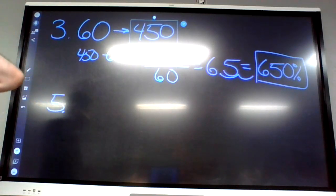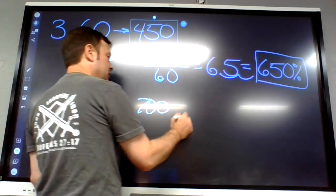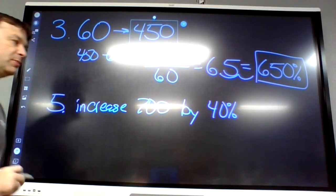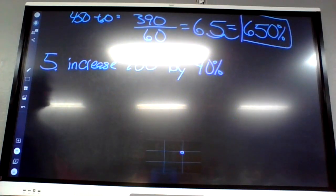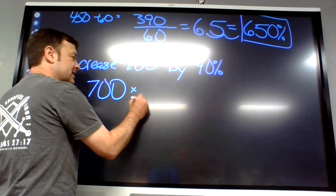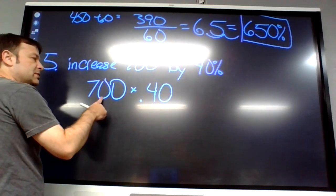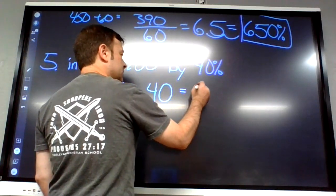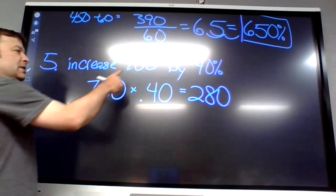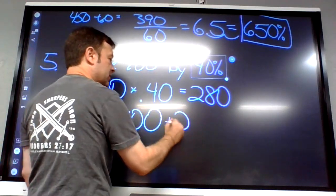New section: increase 700 by 40 percent. Like if you're getting $700 a week and you get a 40 percent raise. First, find what 40 percent of 700 is — that's 0.40 times 700, which is 280. Is that the answer? No — if you're increasing 700, it should be more than 700. That's how much we're increasing by, so we add 280.